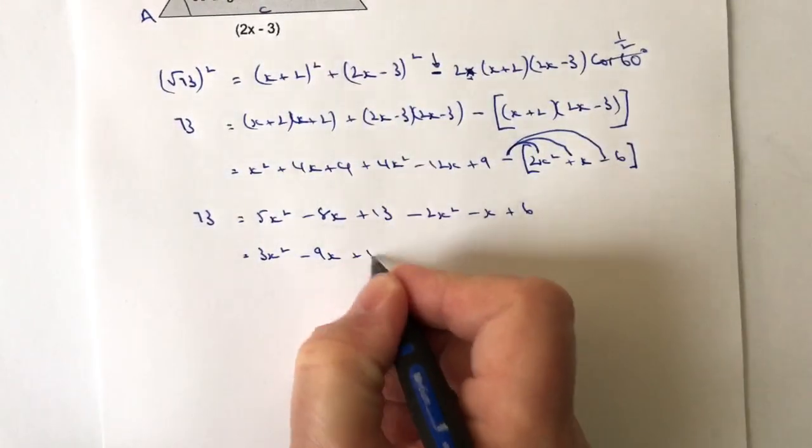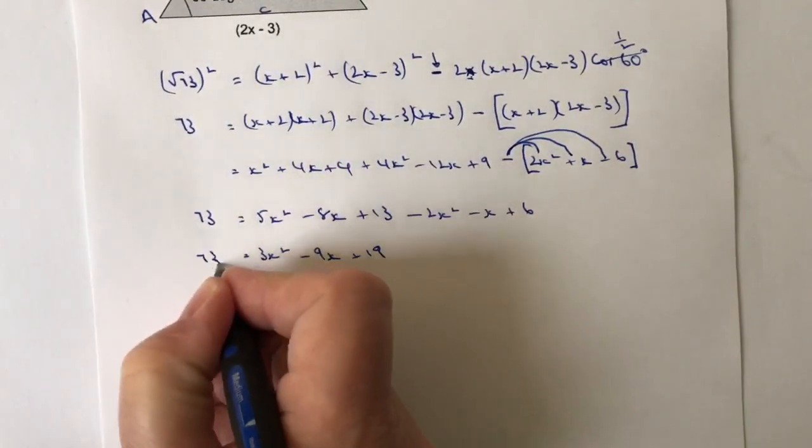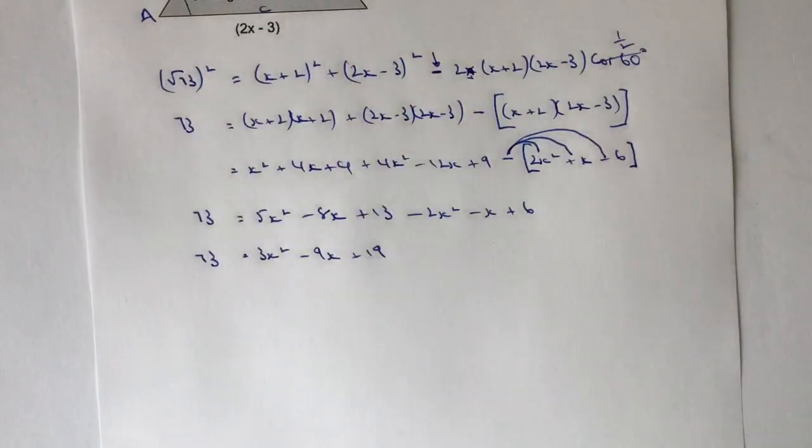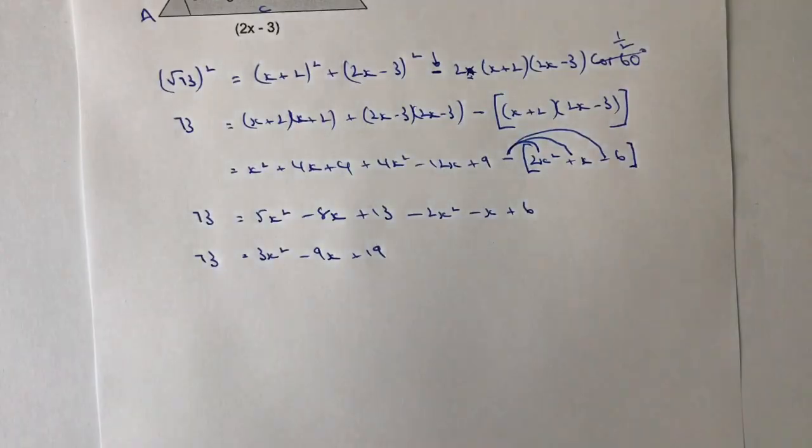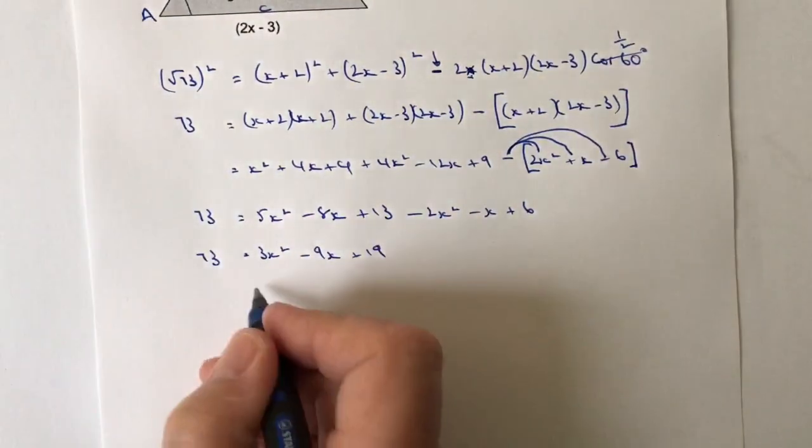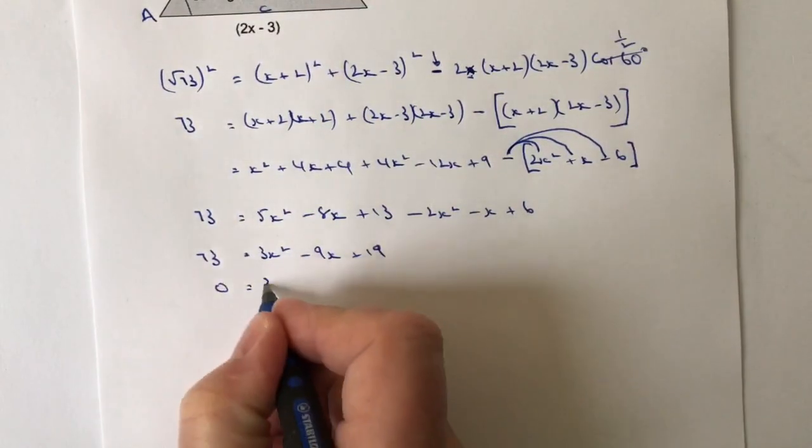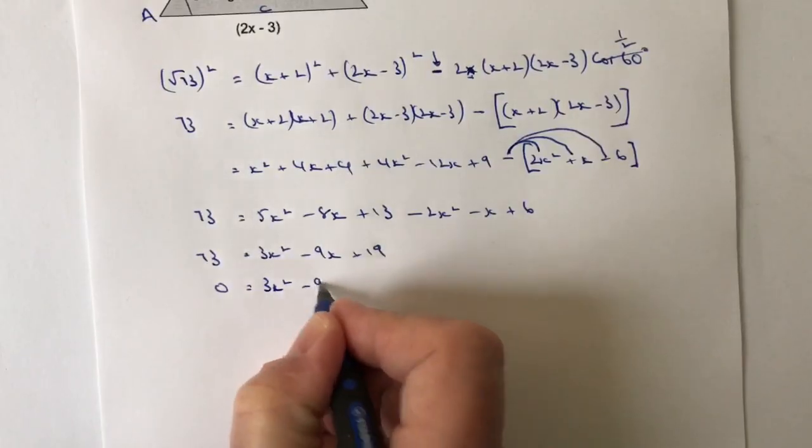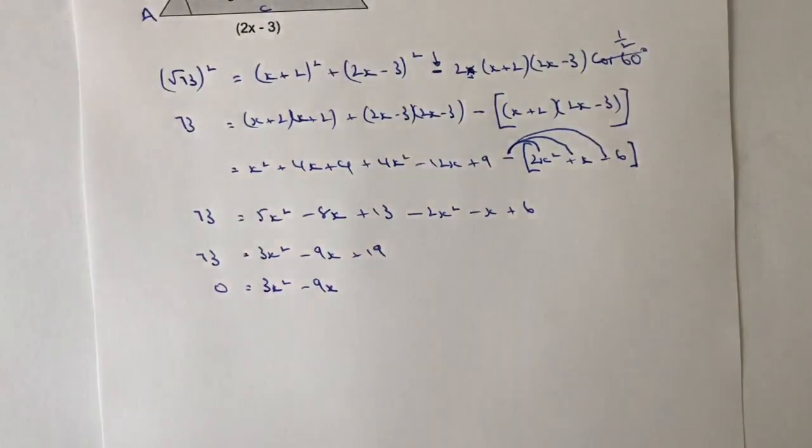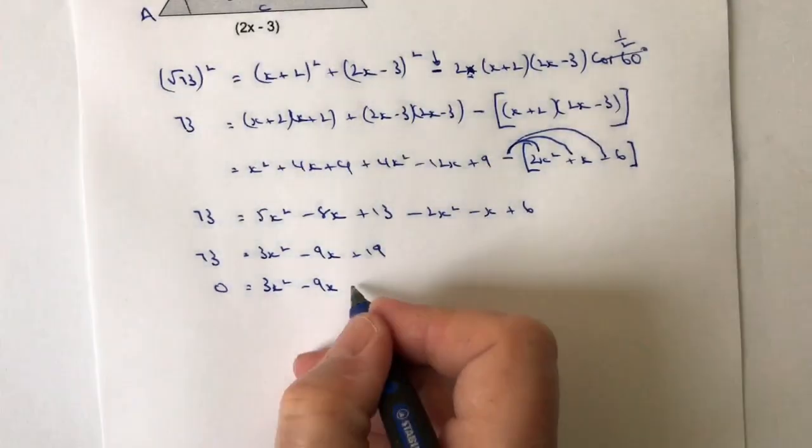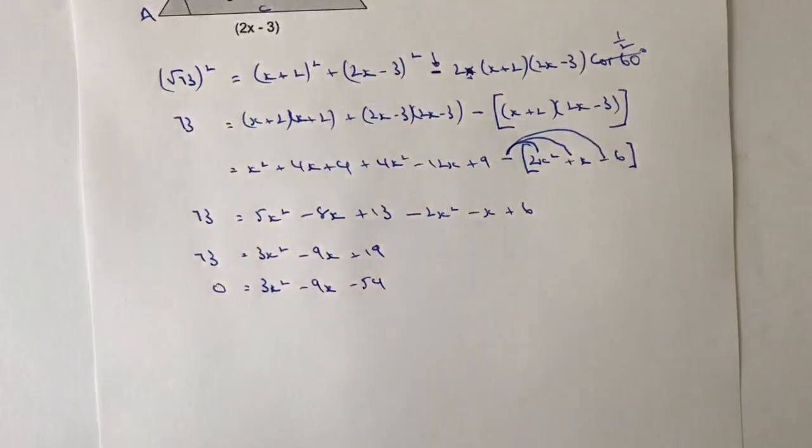That's minus. Again, just being very careful here, the things that are in the brackets, I have to now multiply out by the minus sign. So it's going to be minus 2x squared minus x plus 6. So let's start gathering this all together now. I've got 5x squared minus 2x squared is going to be 3x squared. I've got minus 8x minus x is going to be minus 9x. Then I've got plus 13 plus 6 is going to be plus 19. But I've also got to remember that I have a 73 there. So actually now in order to factorise this, I need to make sure that it equals 0. So if I do that, I bring the 73 over and I've got 0 equals 3x squared minus 9x plus 19 minus 73 is going to be minus 54.